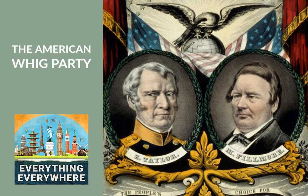Calling their groups Whig Parties was a joke and a jab at Jackson, but it is a joke which is completely over the heads of most modern-day people, so it requires explaining. The Whig Party was actually a political party in Great Britain that formed in the late 17th century and lasted through the mid-19th century. The British Whigs were pro-parliament and supported a constitutional monarchy rather than an absolute monarchy. The joke was, in the American context, that it made Andrew Jackson out to be a king. Hence, the opposition groups called themselves Whigs.